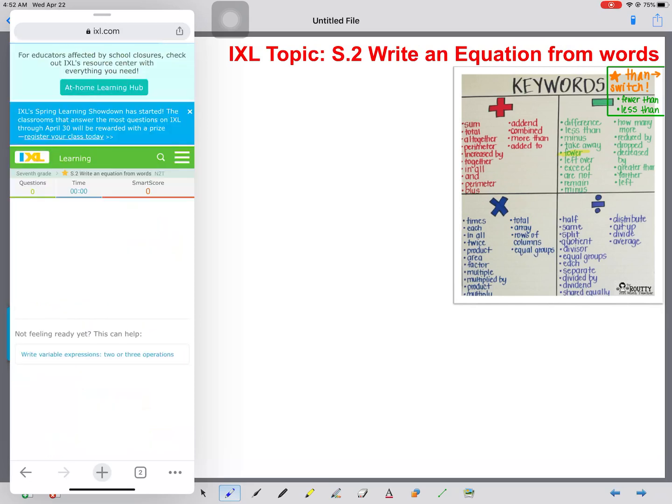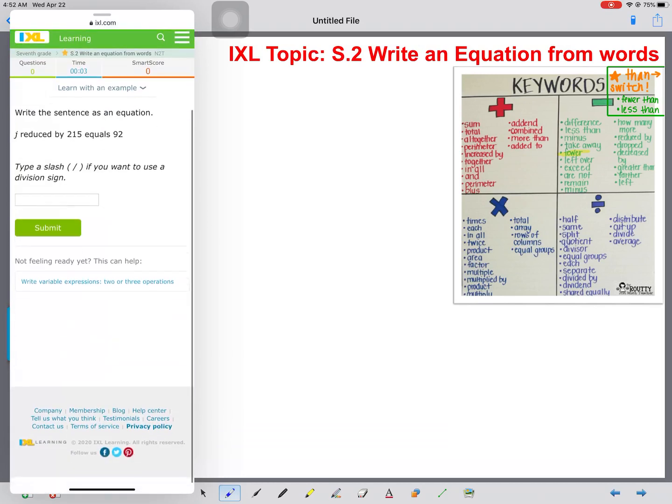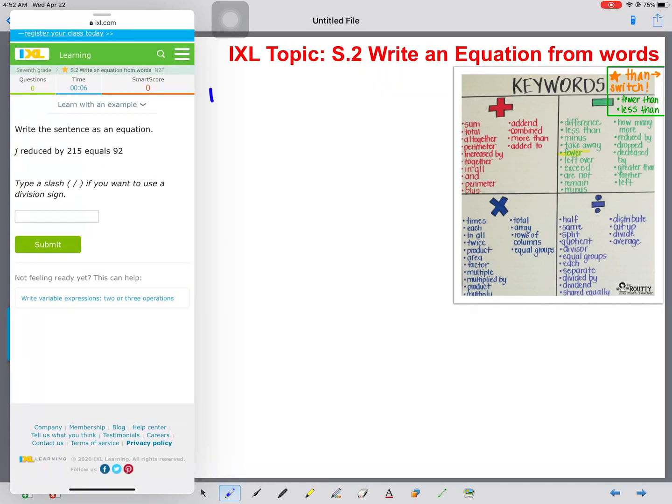We're going to pull up S.2, and I'm actually going to write on our little notebook paper because, you know me, I like to have an extra visual. So let's start. Number one, J reduced by 215 equals 92. So we're going to write it exactly how we see it, and everywhere we can turn a word into a math symbol, we're going to do that. So J reduced by is going to be subtraction. What number is it being reduced by? 215 equals 92.